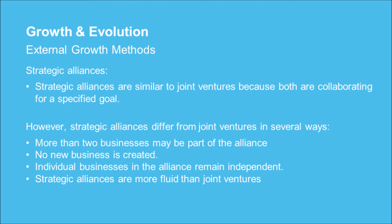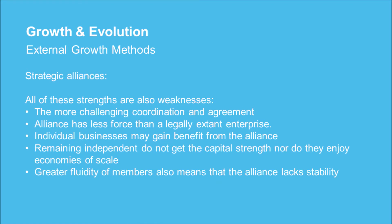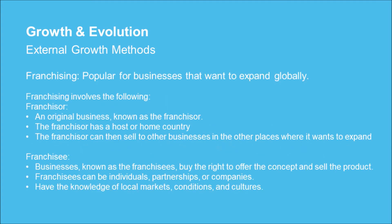Strategic alliances are similar to joint ventures in that both collaborate for a specified goal. However, they differ in several ways: more than two businesses may be part of the alliance, no new business is created, and individual businesses in the alliance remain independent. Strategic alliances are more fluid than joint ventures. Weaknesses include more challenging coordination, the alliance has less legal force, and members do not gain capital strength or economies of scale. Greater fluidity also means the alliance lacks stability.